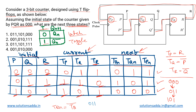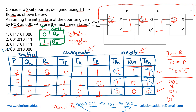So the three states after triple zero are: first 011, then 101, and then back to triple zero. Returning to triple zero is allowed since the question asks for the next three states. The answer is 011, 101, and 000. Looking at the options, the correct answer is option one: 011, 101, 000.